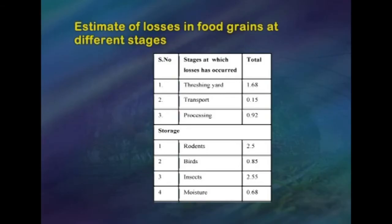We will now see estimates of losses in food grain at different stages. In the threshing yard, the loss is 1.68%; in transport, 0.15%; in processing, 0.92%. During storage: loss by rodents is 2.5%, by birds 0.85%, by insects 2.55%, and due to moisture 0.68%.